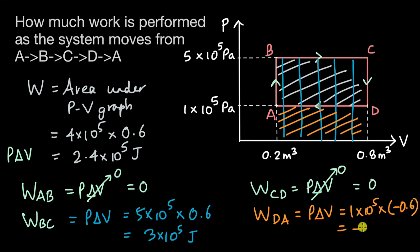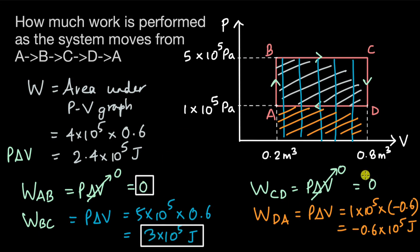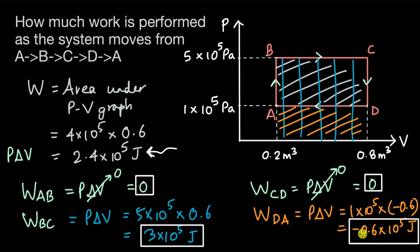To find the total work done in this cyclic process A→B→C→D→A, we add all of these works together. AB gives 0, BC gives 3×10⁵, CD gives 0, and DA gives minus 0.6×10⁵ joules. So 0 plus 0 plus 3×10⁵ plus minus 0.6×10⁵ comes out to be 2.4×10⁵ joules total — the same answer we calculated quickly by finding the area under the PV graph.